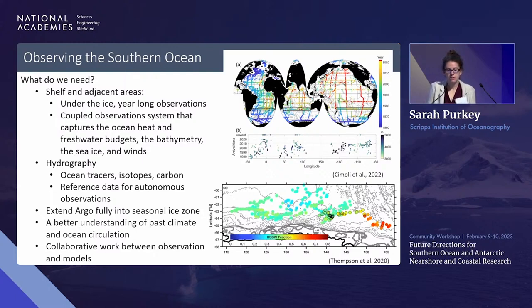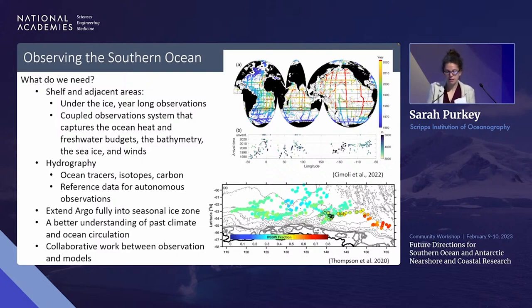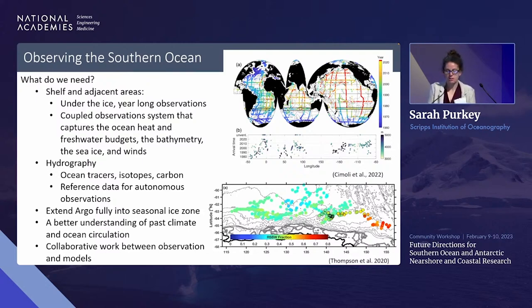I also want to put hydrography on here because we didn't hear that much about it — there are still many things we need from ship-based observations, including ocean tracers. Some recent work with CFC data tells us when water is ventilated throughout the global ocean and can show changes in circulation. We also need to extend Argo — we did work with deep Argo under ice in winter showing the evolution of Antarctic Bottom Water. We should also think about the modeling community and how it will help us answer these questions.